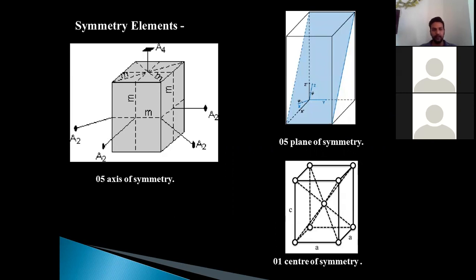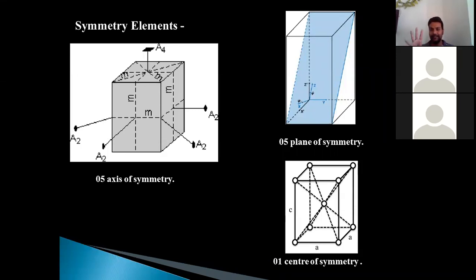Now, symmetry elements. We can see a considerable decrease in symmetry elements compared to the isometric system. In the isometric system, there were 13 axes of symmetry, 9 planes of symmetry, and 1 centre of symmetry. But here, in the tetragonal system, we have 5 axes of symmetry, 5 planes of symmetry, and 1 centre of symmetry. The 5 axes of symmetry signify that there are 5 axes in the tetragonal system along which, if you rotate the crystal by 360 degrees, the referred face will repeat itself at least twice. Among the 5 axes, 4 are represented as A2 and the 5th is represented as A4.